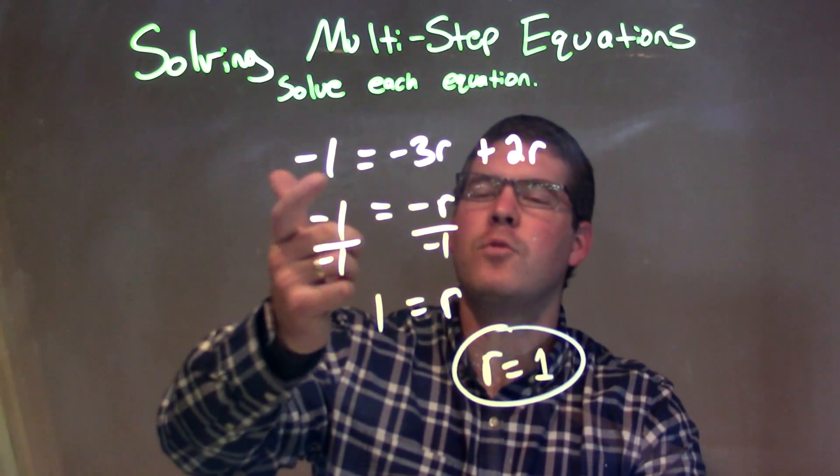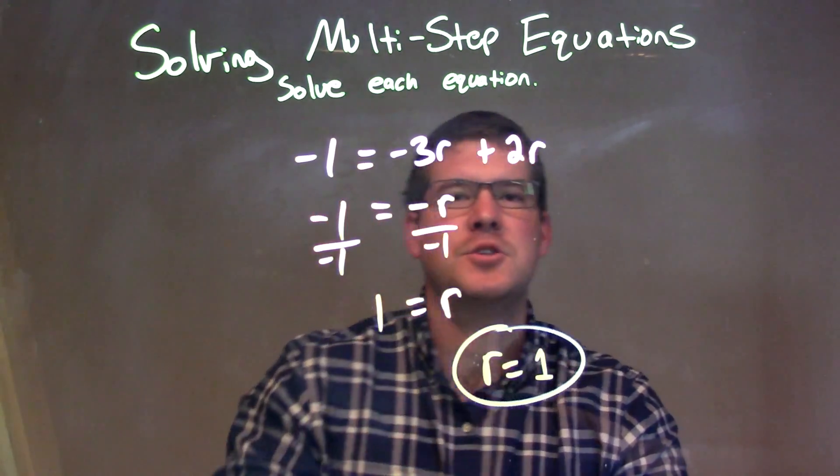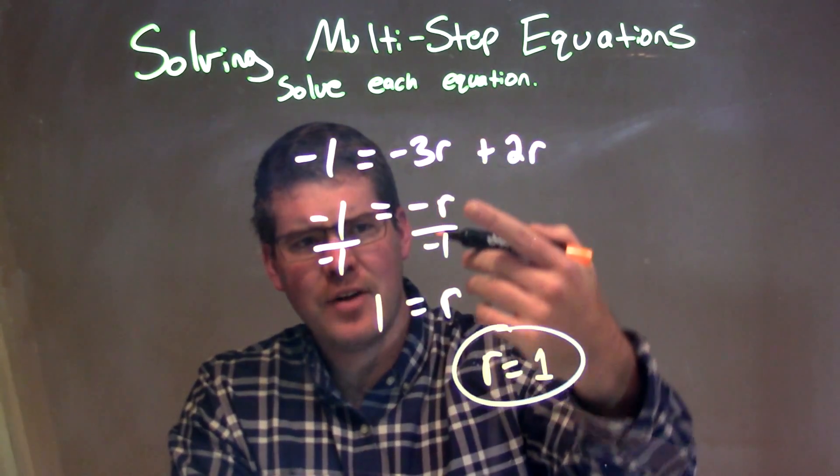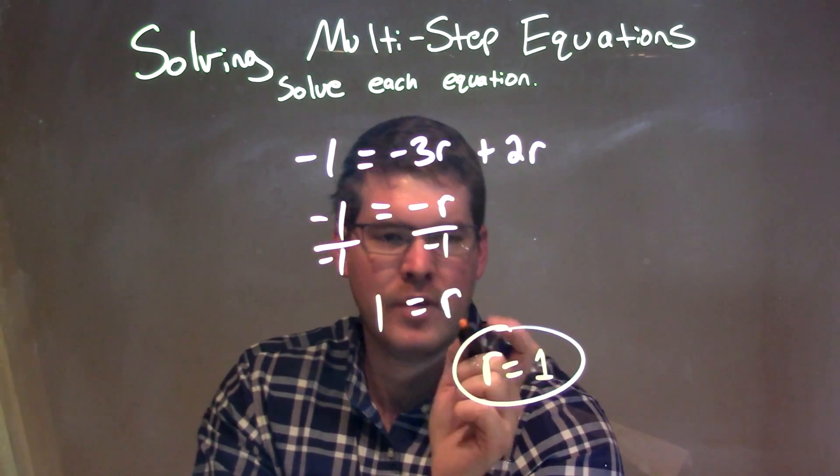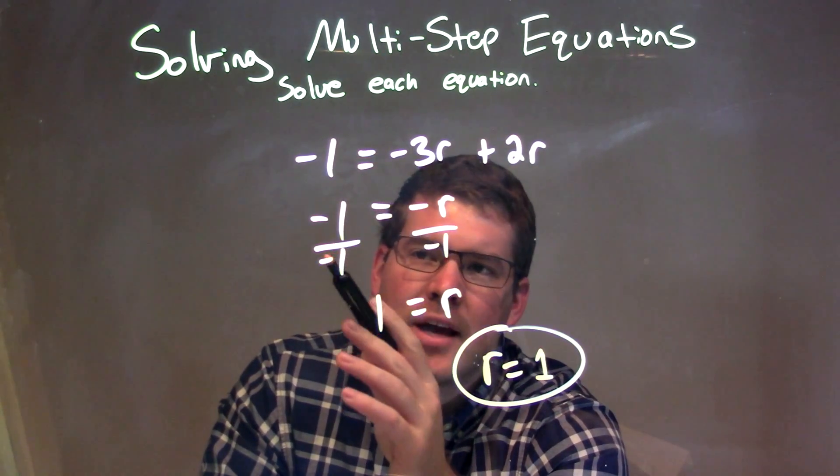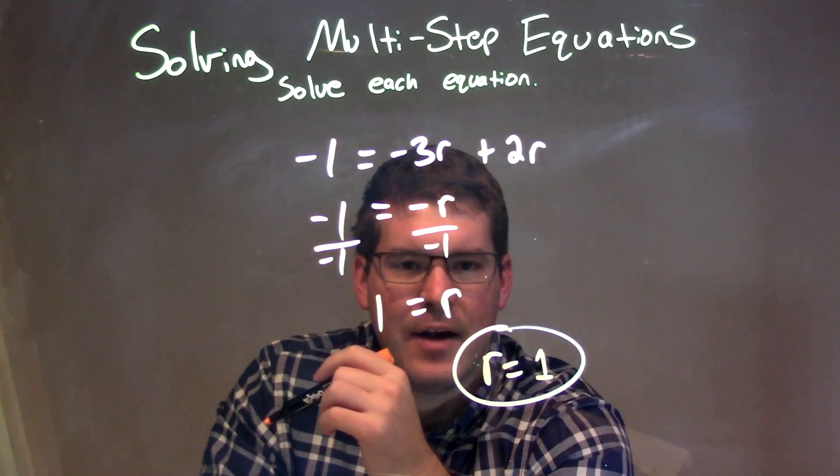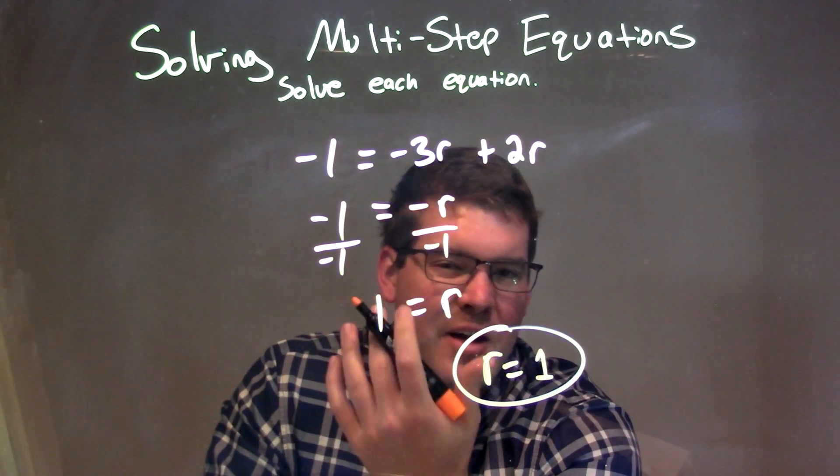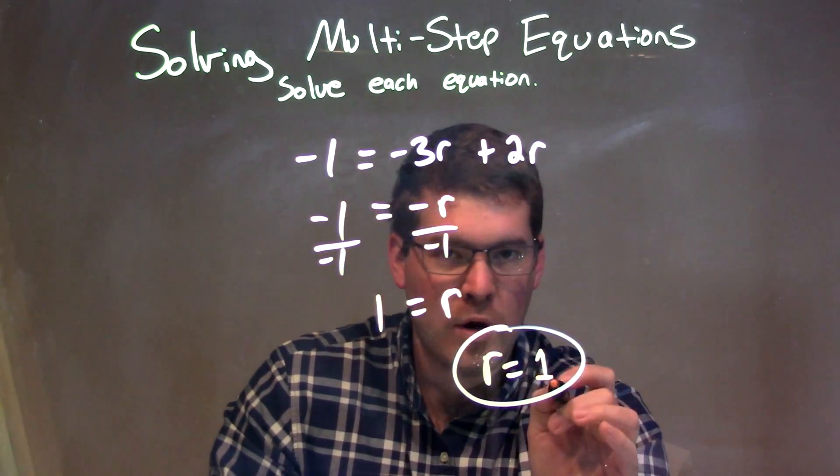So, let's recap. We're given negative 1 equals negative 3r plus 2r. I combine negative 3r and 2r to give me negative r. I then divided both sides by negative 1 to make that negative r become positive, so we have a positive r on the right, and on the left, negative 1 divided by negative 1 is a positive 1. So r is isolated. I rewrote it to have r come first, and our final answer here is just r equals 1.